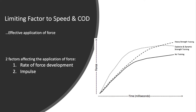The limiting factor to speed and change of direction ability is the athlete's capacity to produce force, also known as their strength capacity. There are two variables that describe force relative to the time available to produce force. The first is rate of force development, and the second is impulse. On this figure, the x-axis is time in milliseconds and the y-axis is force development. Explosive and dynamic strength training, also known as power-based training, improves the rate of force development and impulse. In contrast, heavy strength training does not affect the rate of force development but rather the total force development, also known as strength.